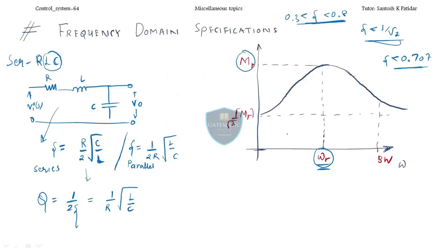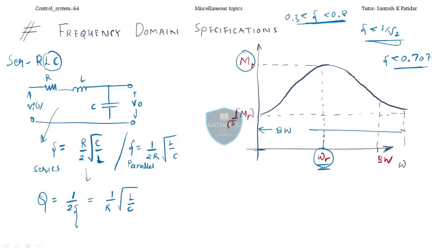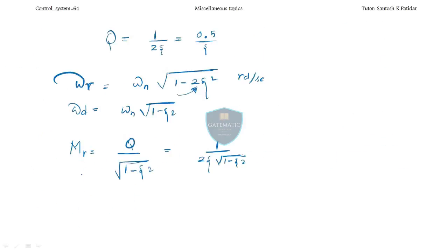Now the bandwidth — lower cutoff and upper cutoff define the bandwidth of the system. We have a formula for the bandwidth. The bandwidth formula involves omega_n — you start under the root and write 1 minus 2 zeta squared, then alternately use minus and plus in the expression.